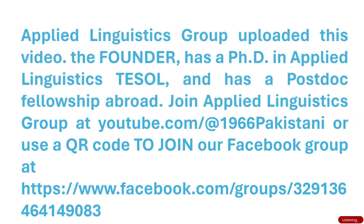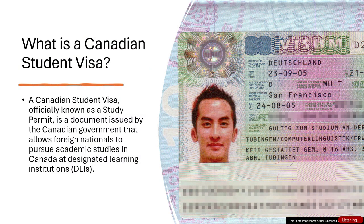Slide 1 — Introduction Question: What is a Canadian Student Visa? Answer: A Canadian student visa, officially known as a study permit, is a document issued by the Canadian government that allows foreign nationals to pursue academic studies in Canada at designated learning institutions (DLIs).